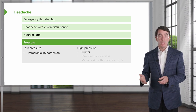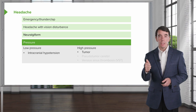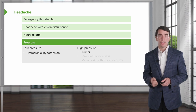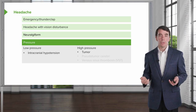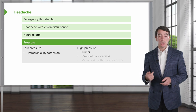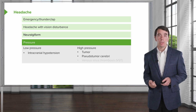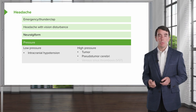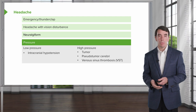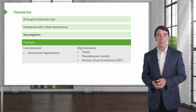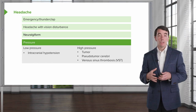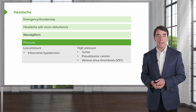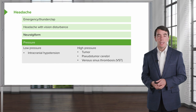There are also high pressure causes. A tumor is extra mass on the brain and causes too much pressure and head pain. There's pseudotumor cerebri, which we will learn about, and venous sinus thrombosis — a blood clot that causes too much venous blood, and a backup of blood contributes to pain.